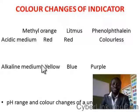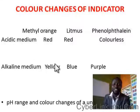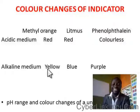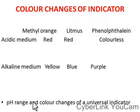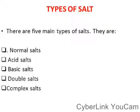Now in acidic medium. If you are in a basic or alkaline medium — if you put methyl orange inside an alkaline or a base, the methyl orange will turn yellow. If you put red litmus paper inside an alkaline, it will turn blue. If you put phenolphthalein inside an alkaline, it will turn purple. That covers the pH range and color change of a universal indicator.